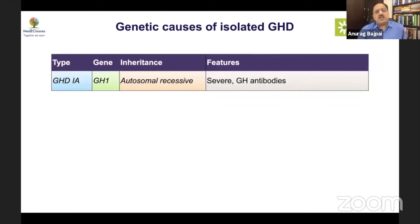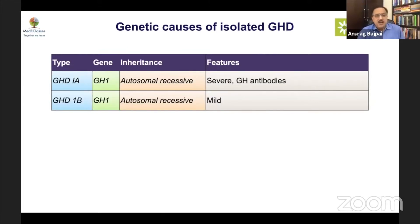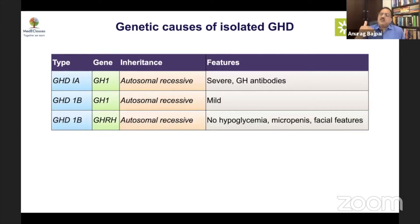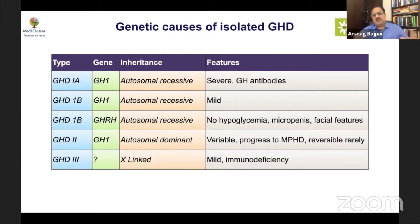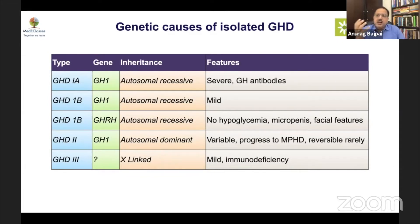Isolated GHD can occur with a severe GH1 gene defect — if you start treating this, antibodies will form. GHD1B is a recessive, milder form. A GHRH defect does not cause hypoglycemia or micropenis, and has characteristic patient features. GHD2 is variable and progresses to multiple pituitary hormone deficiency, sometimes reversibly. These defects present early with severe growth failure without other pituitary hormone deficiency, with the exception of GHD2, where a splicing defect causes accumulation of abnormal GH that destroys somatotrophs and surrounding cells, causing evolving MPHD.